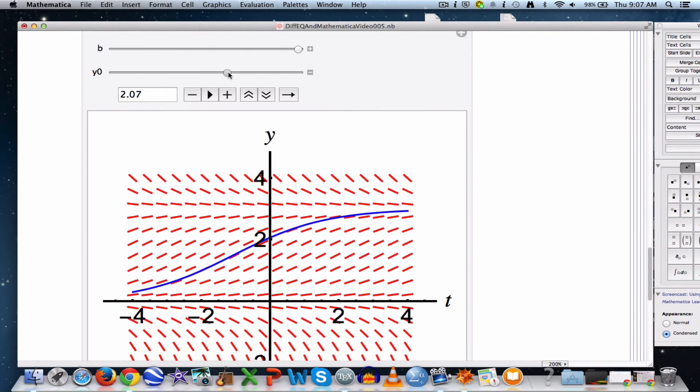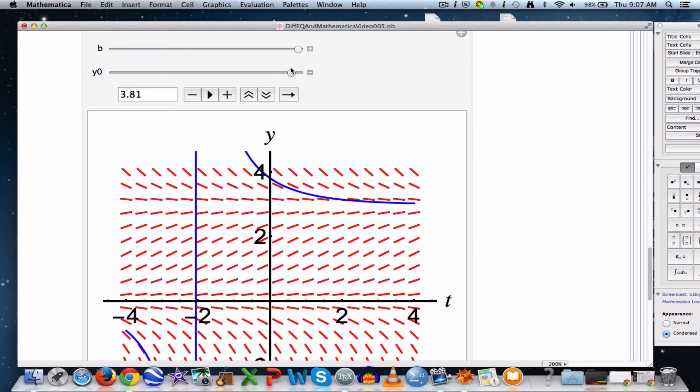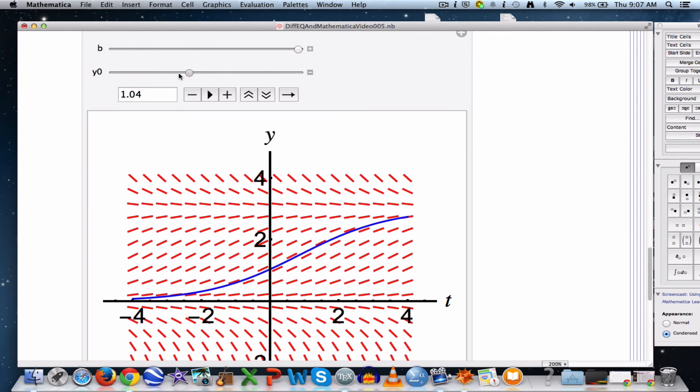Now let me let y0 change. As y0 increases, the graph goes up, though it's still increasing. If it goes down, the graph goes down, though the function's still increasing. If it goes above 3, however, the function goes from increasing to decreasing, and it has a vertical asymptote when y0 is bigger than 3. We already saw that symbolically. When it goes below 0, it also goes from increasing to decreasing, and once again you've got a vertical asymptote.